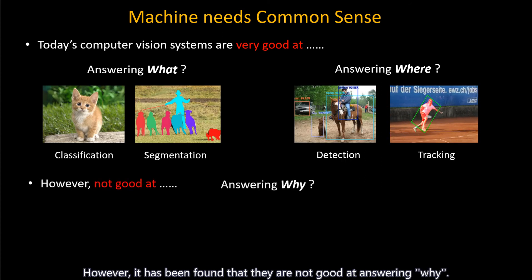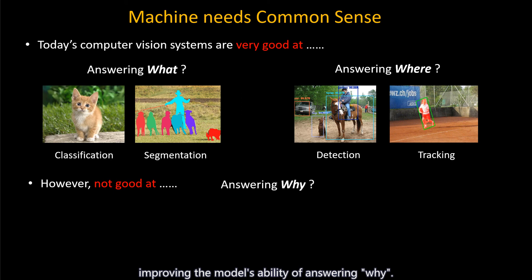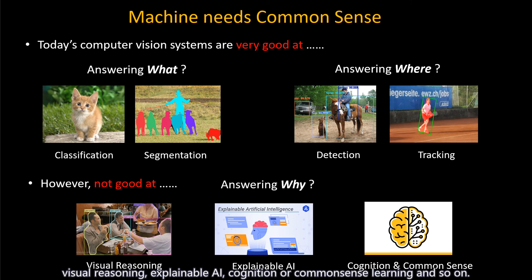However, it has been found that they are not good at answering why. Recently, more and more researchers have been calling for improving the model's ability of answering why. To tackle this, the community has proposed many tasks, such as visual reasoning, explainable AI, cognition or common sense reasoning, and so on.